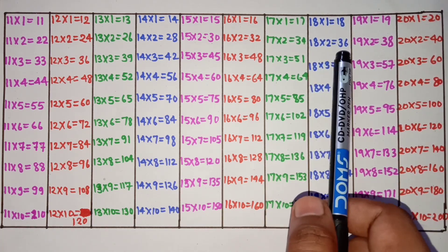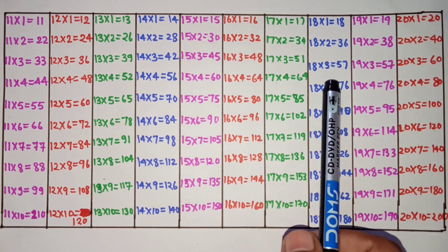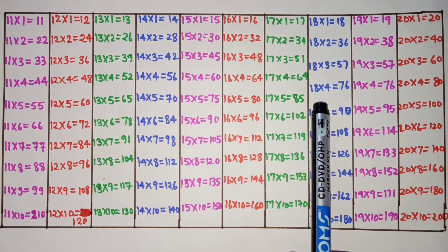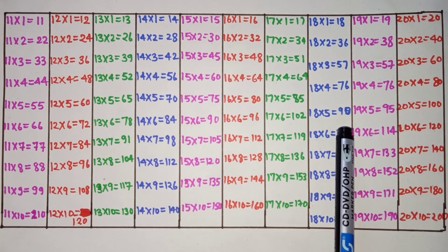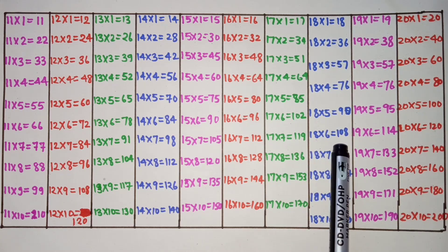18 ones are 18, 18 twos are 36, 18 threes are 54, 18 fours are 72, 18 fives are 90.